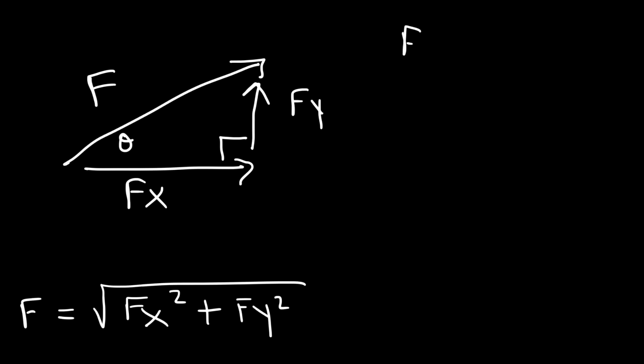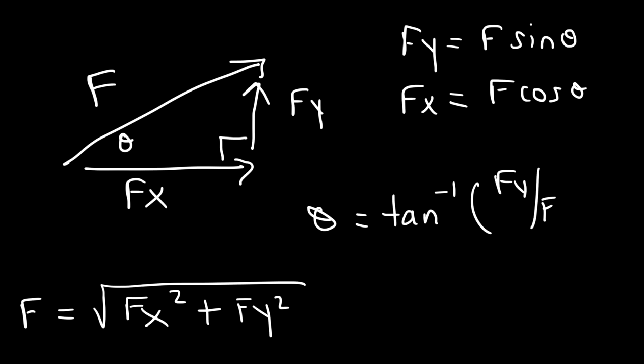f of y is f times sine theta. f of x is f times cosine theta. And if you need to find the angle, this is an acute angle between 0 and 90. You can use the arctan, or the inverse tangent formula. It's f of y over f of x. And if I was you, just make f of x and f of y positive. And this will give you the reference angle, or the angle between 0 and 90 that's within this triangle. And then you can always adjust the angle based on what quadrant it should be located in. But these four equations can help you to find missing quantities associated with vectors.